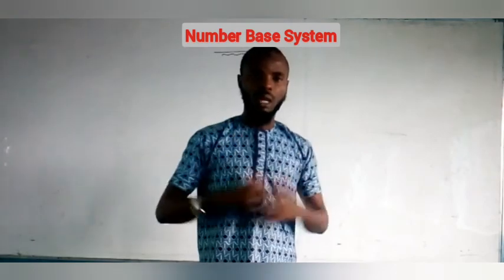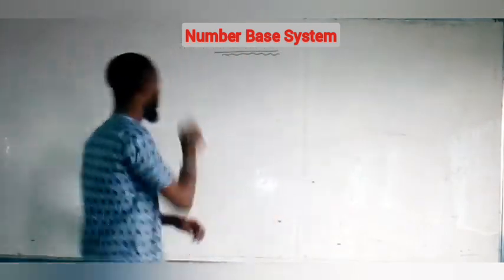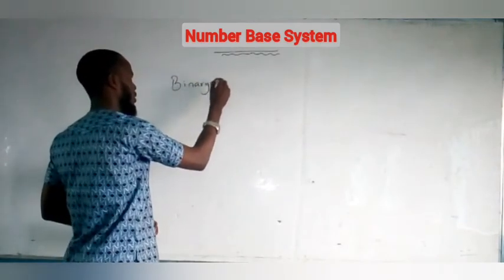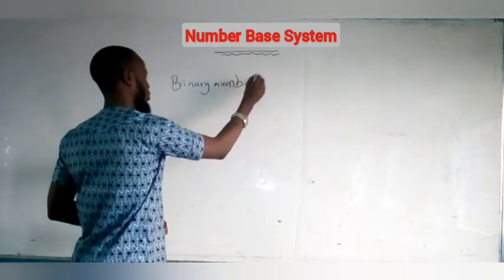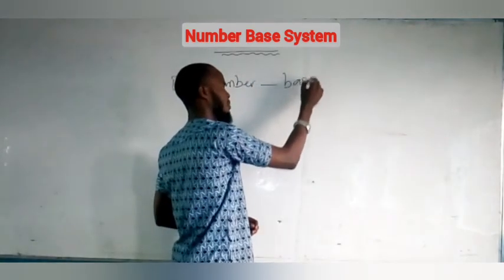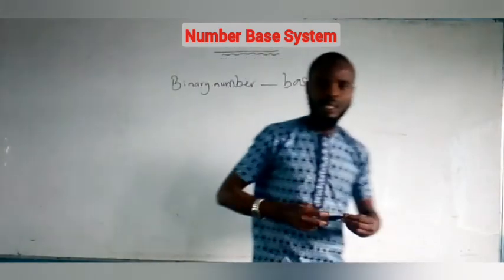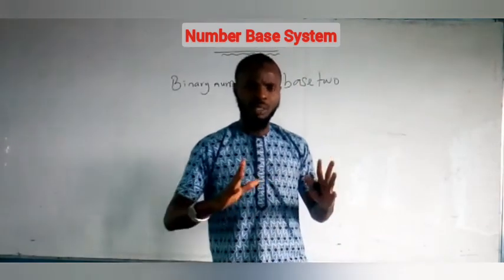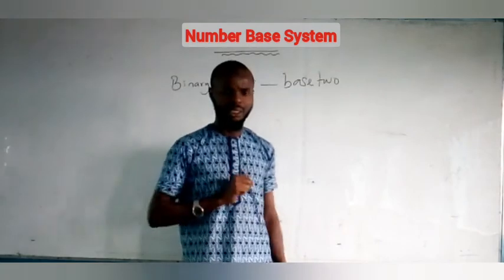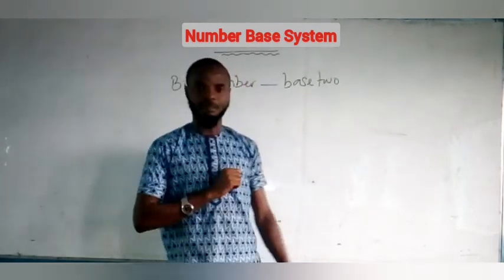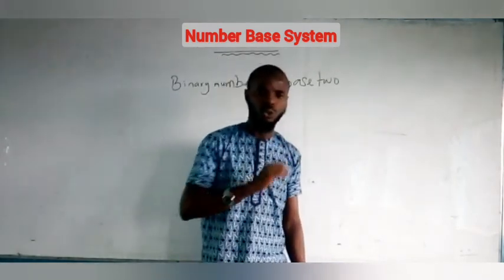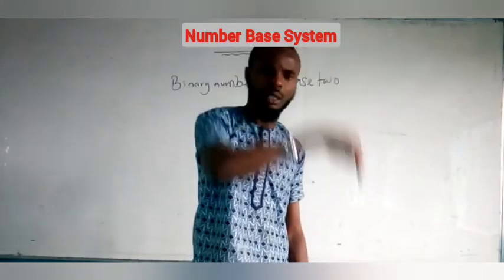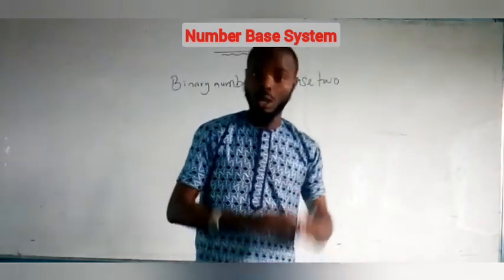One of the things we need to know is that we are going to talk about binary numbers. Binary numbers are numbers in base 2. This is commonly used for people in the computer science department, because binary numbers are assumed to only have two digits. For every number-based system, the number of digits required must not be equal to or greater than the base.